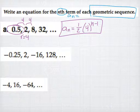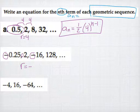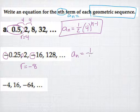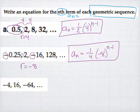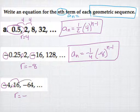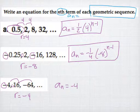For the next sequence with alternating signs, r will be negative. Going from one-fourth to 2 then to negative 16, you multiply by negative 8 each time, so r equals negative 8. The formula is a_n equals negative one-fourth times negative 8 to the n minus 1. For the last problem — also with alternating signs — from -4 to 16 to -64, you multiply by negative 4 each time. The formula is a_n equals negative 4 times negative 4 to the n minus 1.